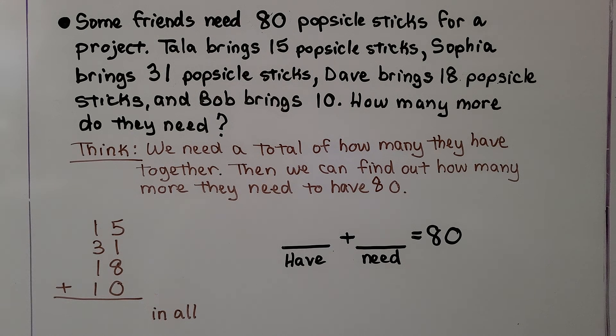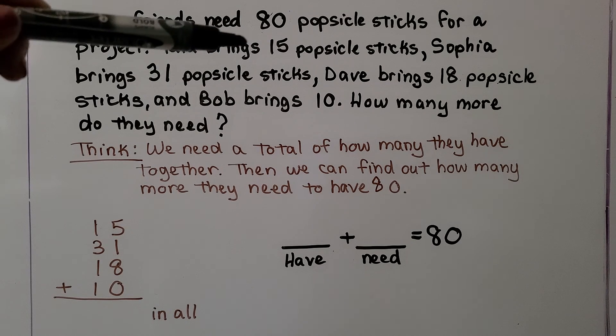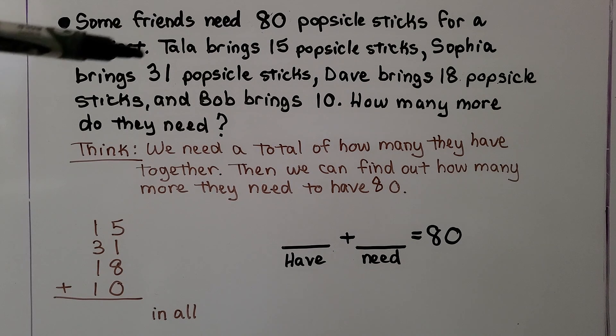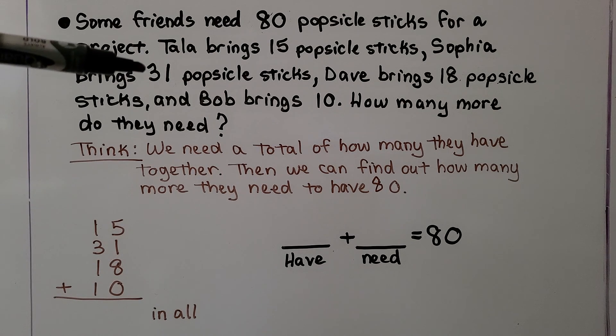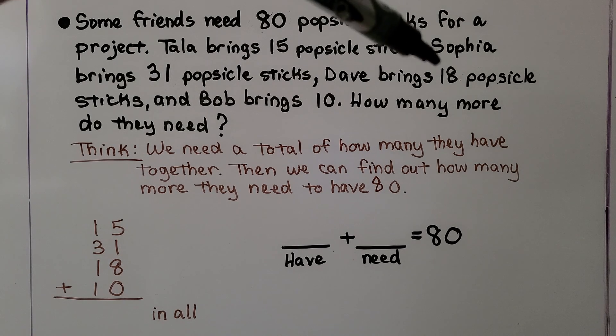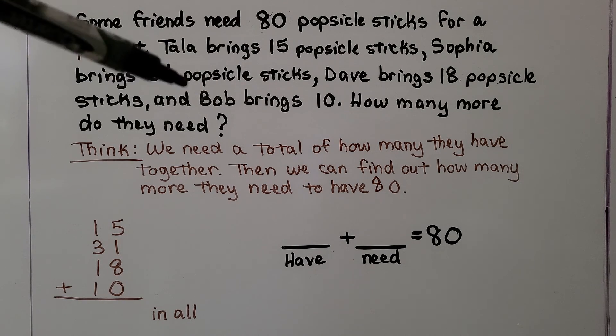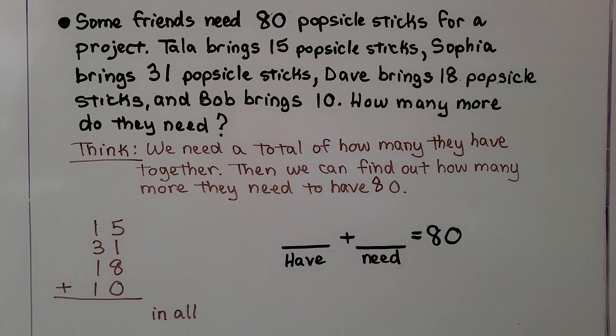Some friends need 80 popsicle sticks for a project. Tala brings 15 popsicle sticks, Sophia brings 31 popsicle sticks, Dave brings 18 popsicle sticks, and Bob brings 10. How many more do they need? We think we need a total of how many they have together. Then we can find out how many more they need to have 80.